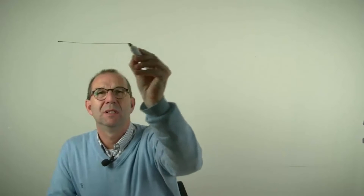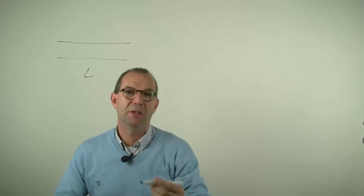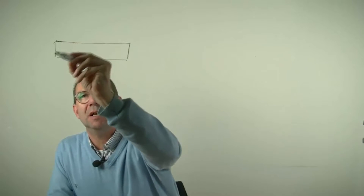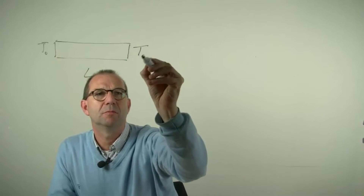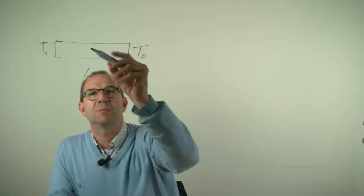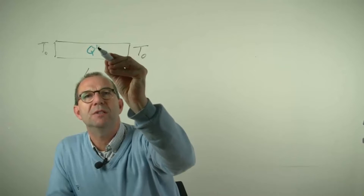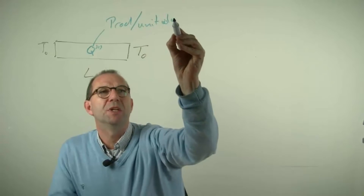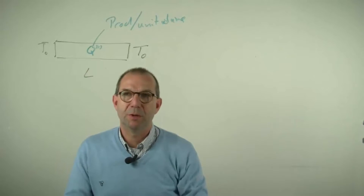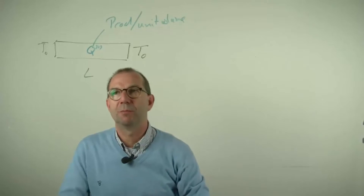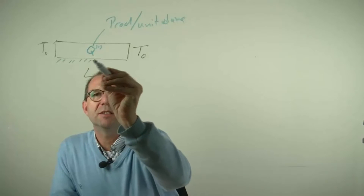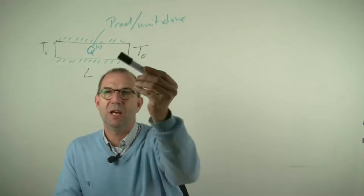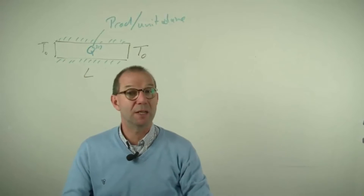Let's start with a sketch. This is the rod of length L — you may think of it as just a cylindrical shape rod. At the ends it is held at a fixed temperature T0, same on both sides. Inside, production takes place in a uniform way, denoted by Q triple-prime — production per unit volume, per cubic meter. Everywhere inside this rod this heat is produced, so in every cubic centimeter the same amount is produced. The rod is insulated all around except for the two ends where temperature is fixed. This means the heat produced inside can only escape left or right, turning it into a one-dimensional problem.